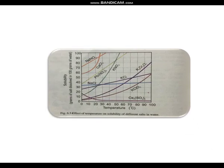Here you can see a graph with solubility on the vertical axis - grams of salt dissolving in 100 grams of water. The horizontal axis shows temperature in Celsius. The figure shows that different salts have different solubility patterns.